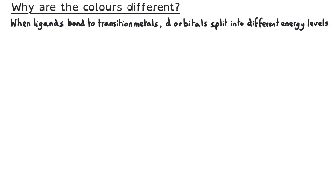Now that we know that substances absorb and transmit different colours, let's explore why this happens and why the colours are different for different metals. When ligands bond to transition metals, the five orbitals in the D subshell split into different energy levels.